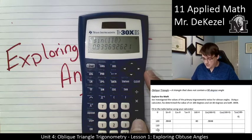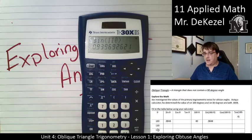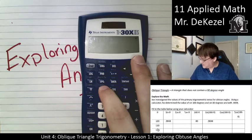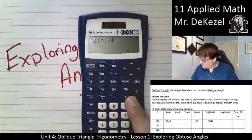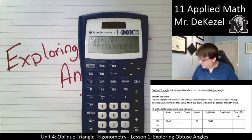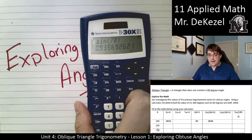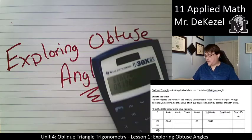And if I do the sine of 70, the complement of that, sine of 70, 0.9397. I get the exact same number. So that is a pattern in the sine ratios.